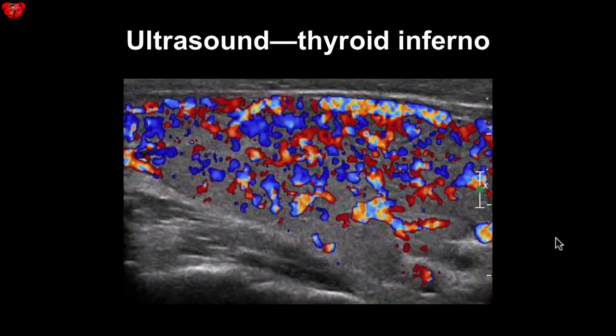Imaging can also be helpful in making the diagnosis of Graves' disease. On ultrasound, the thyroid will be very vascular, what is sometimes referred to as the thyroid inferno. This is due to the constant stimulation of the thyroid by the TSH receptor antibodies.